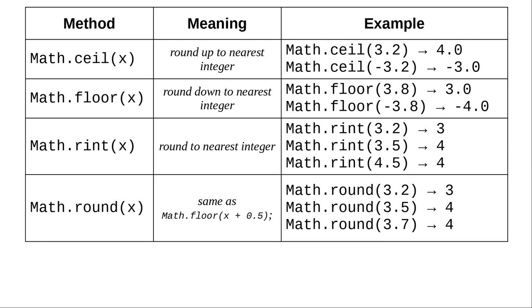Rint rounds to the nearest integer. If a number is exactly between two integers, it rounds to the nearest even integer. Half the time it'll round up, half the time it'll round down, and it'll all average out.